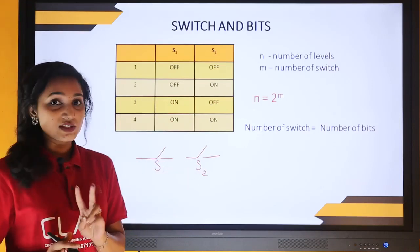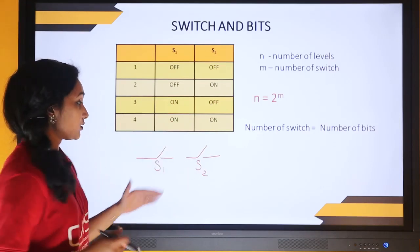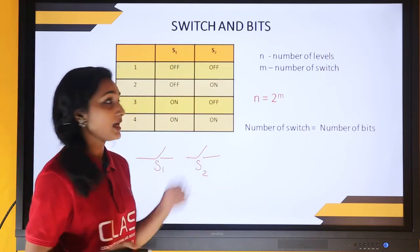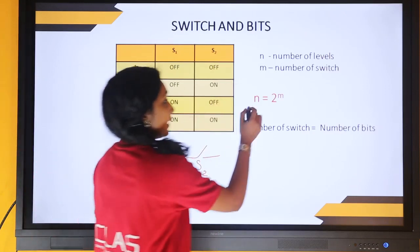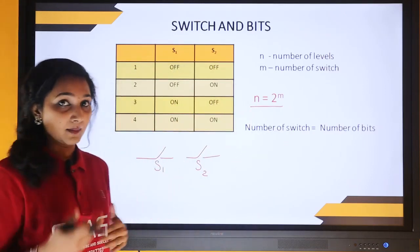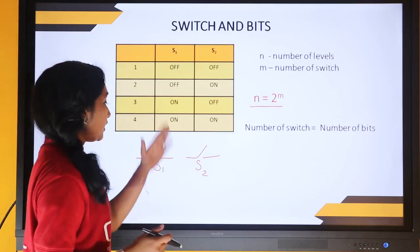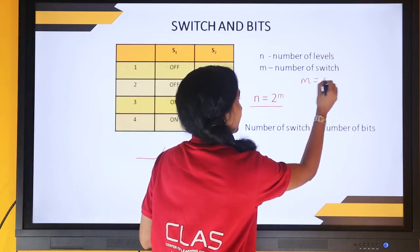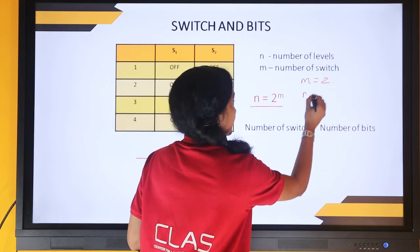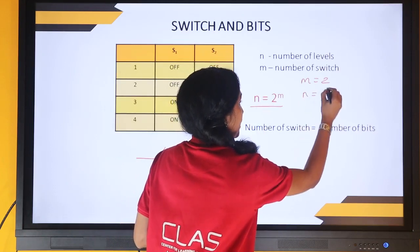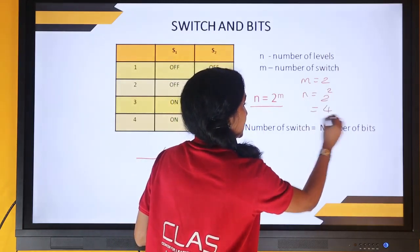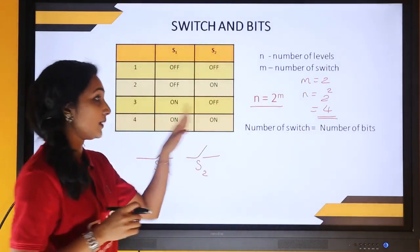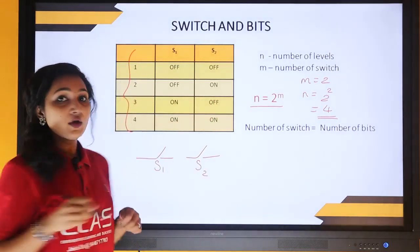Generalizing this topic: if N is the number of levels or conditions and M is the number of switches, then the number of levels will be N = 2 to the power of M. For example, with M = 2 switches, N = 2² = 4. So using two switches we develop four levels or conditions.